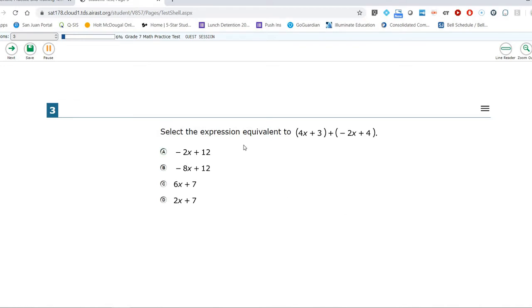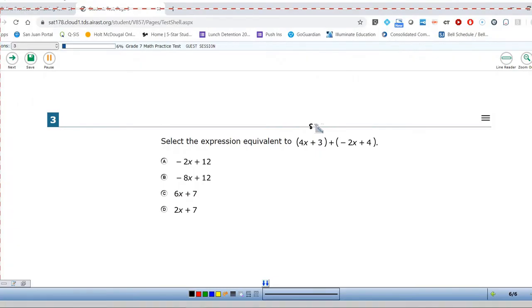Alright so kind of switching gears here for the third question. Now we've got an algebraic expression. And they are asking us to find the one that is equivalent. So what they want us to do is they want us to take this expression and they want us to simplify. And when you're simplifying an expression we've learned a couple different ways. One of the ways we simplify an expression is to apply the distributive property. That's not the case here because we don't have any multiplication going on. Another way we simplify expressions is by combining like terms.